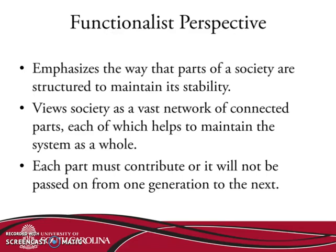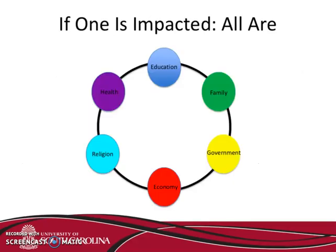The main function of the functionalist perspective of sociology is to understand how society maintains its stability — how society functions as a whole. Each part of society must work together to make the society function. If an aspect of society falls, you will not necessarily have the society to pass on to the next generation. Looking at this diagram, the functionalist perspective shows that if one element is impacted — health, education, family, government, economy, or religion — all are impacted.